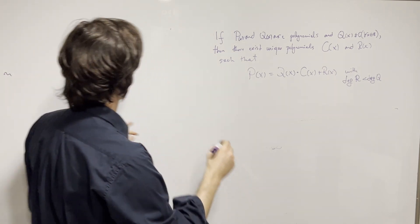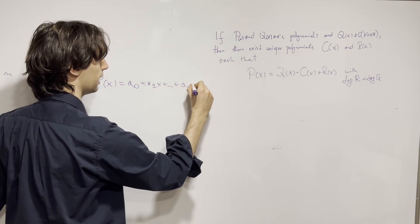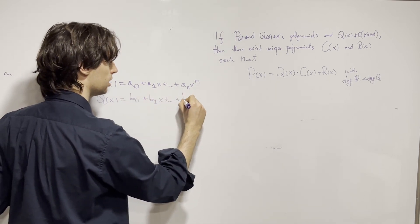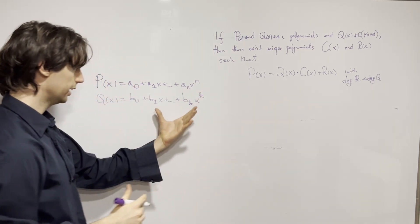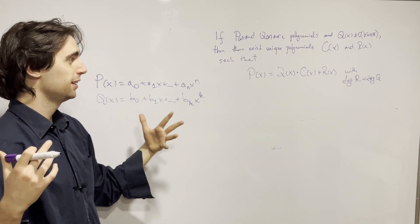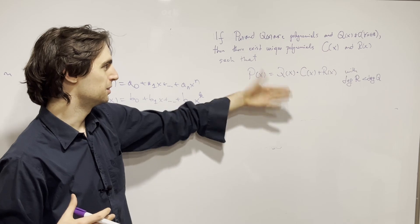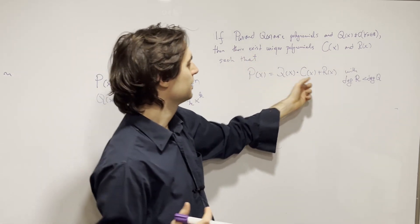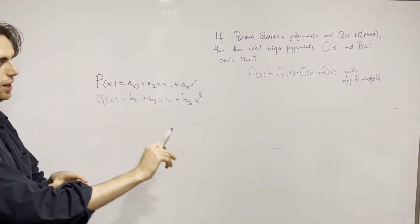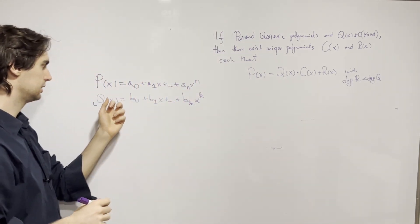Now let's solve this. Let p of x equal a_0 plus a_1 x plus all the way up to a_n x^n, and let q of x equal b_0 plus b_1 x plus all the way up to b_k x^k. To understand this proof you need to understand induction. Also notice how similar this is to the Euclidean algorithm in number theory — if instead of polynomials p and q you had integers, you'd also have unique c and r in the integers.